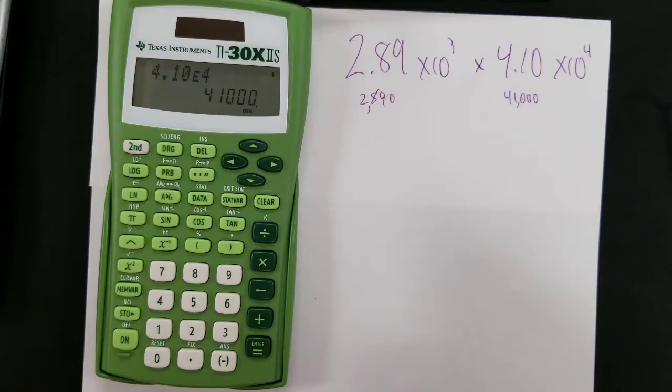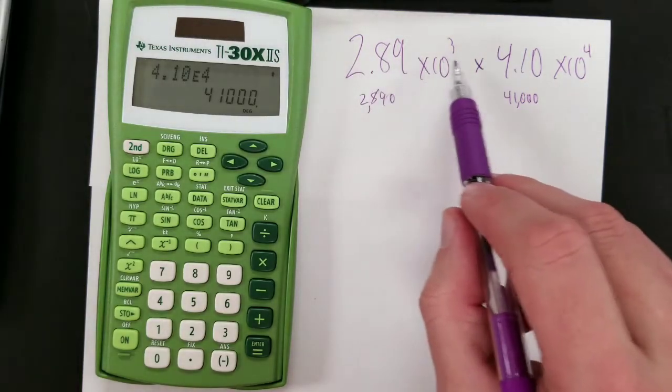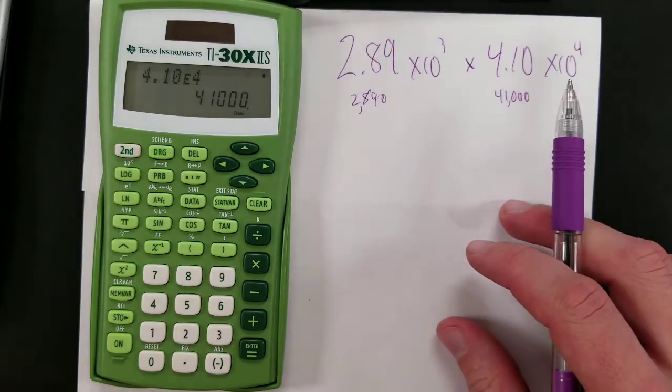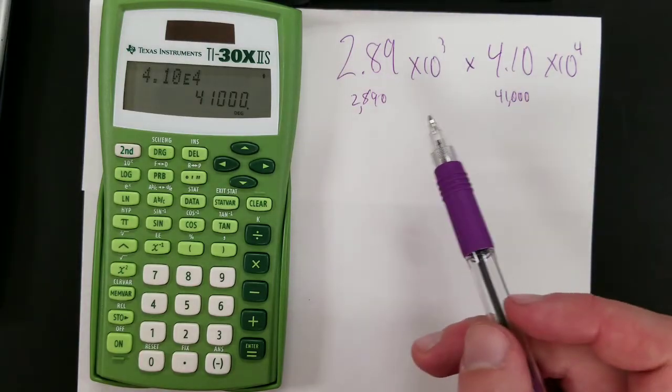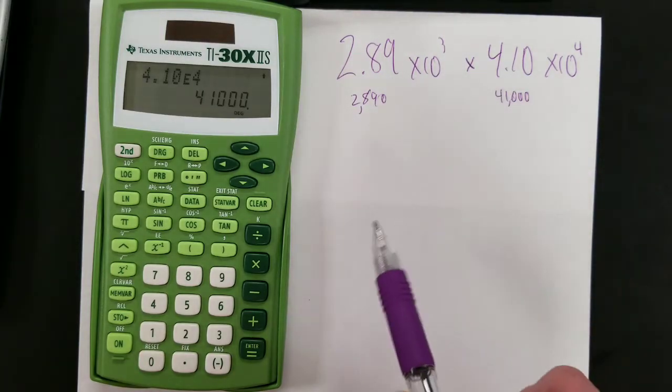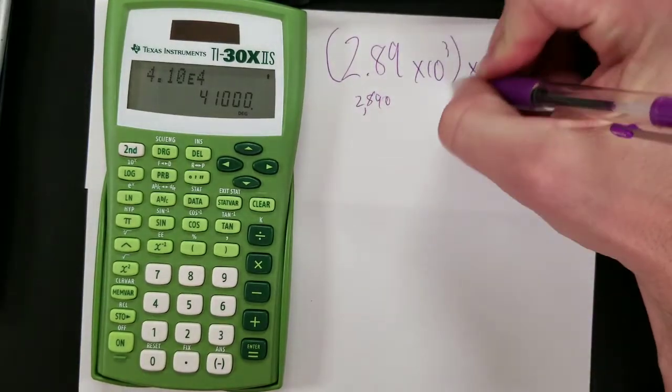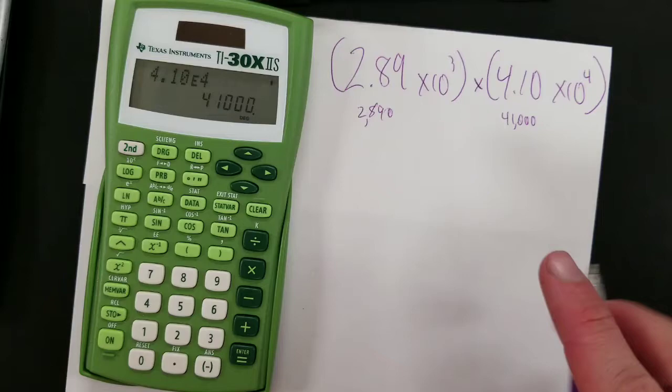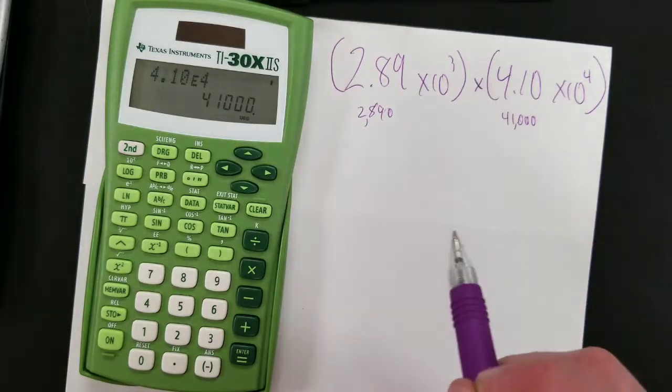Alright, so if we want to multiply these by each other, if you type it in exactly as shown here, it will probably work for multiplication. For other functions such as addition, subtraction, this will probably cause an order of operations error if you do not include parentheses. Parentheses are critical to ensure that this function doesn't get mixed up with this one.